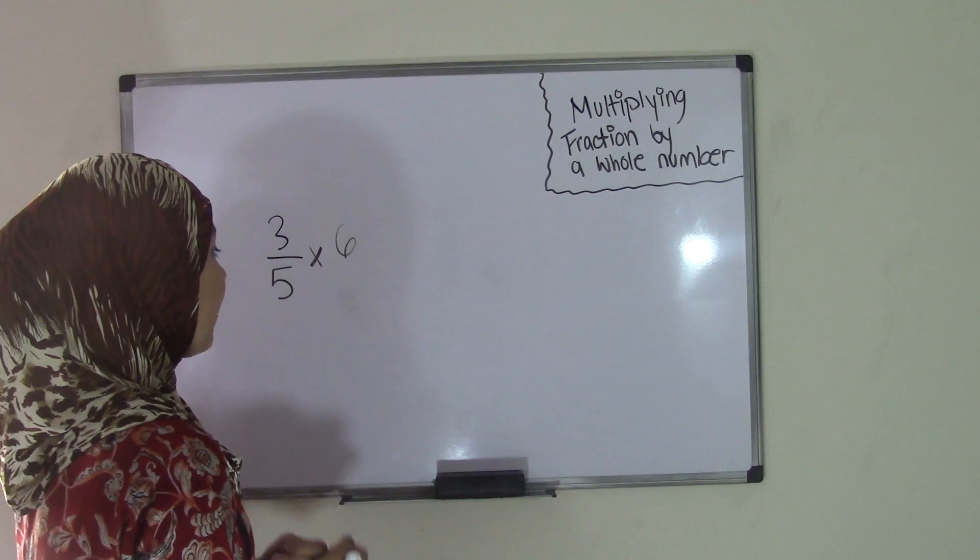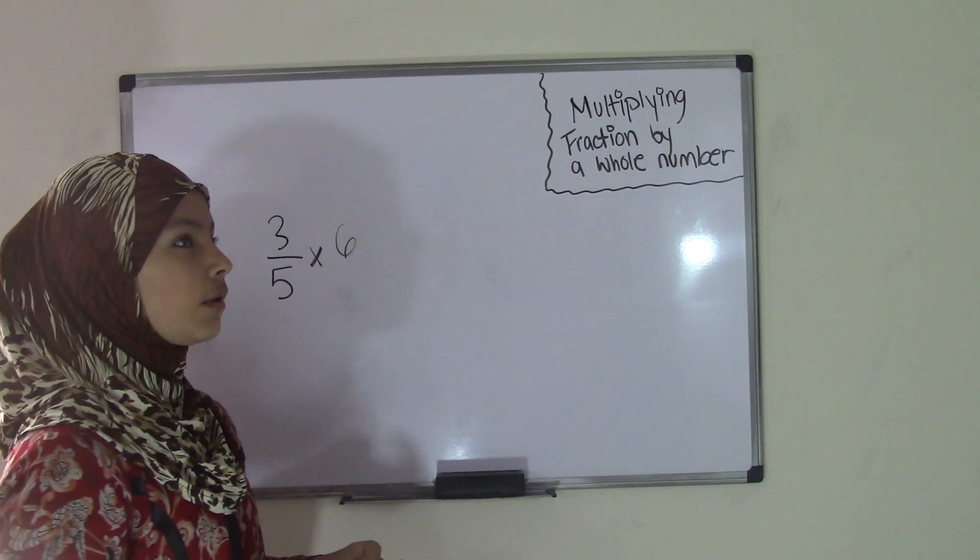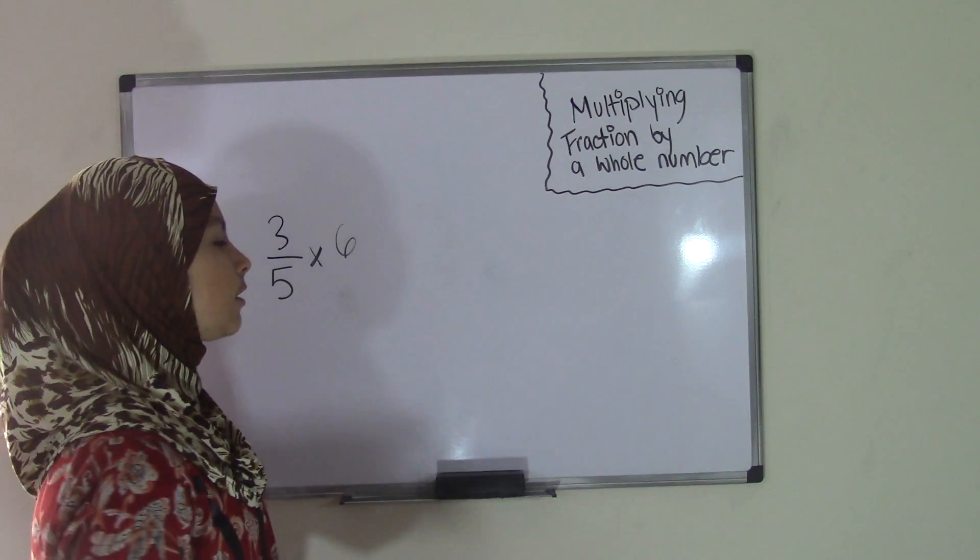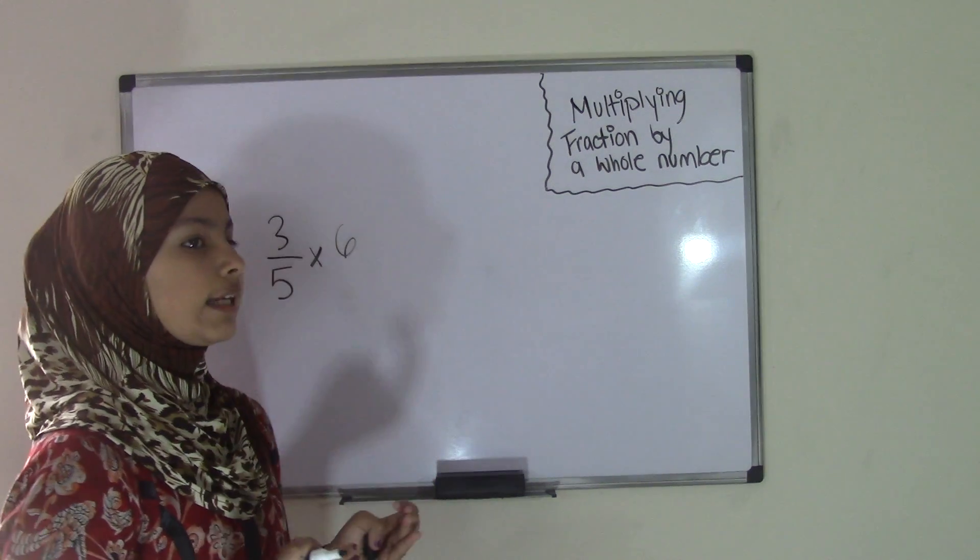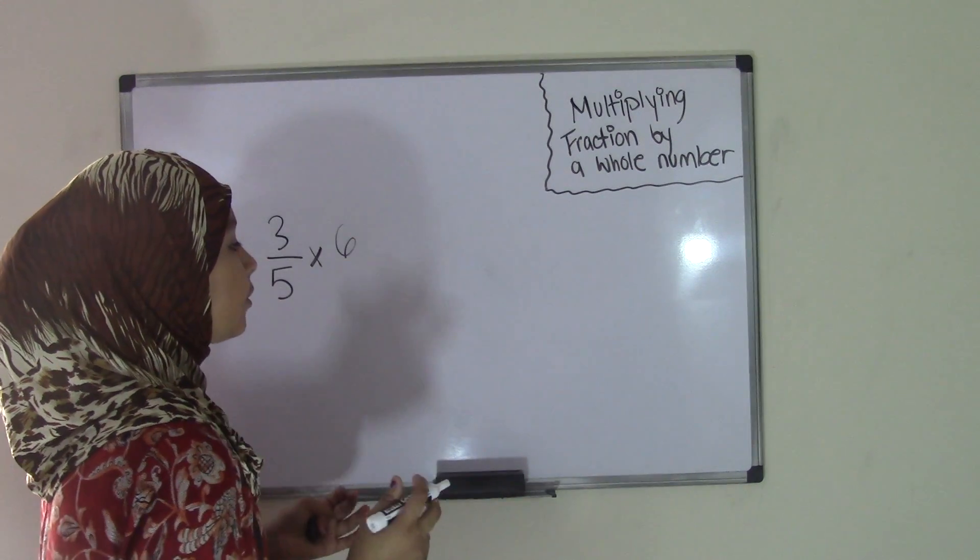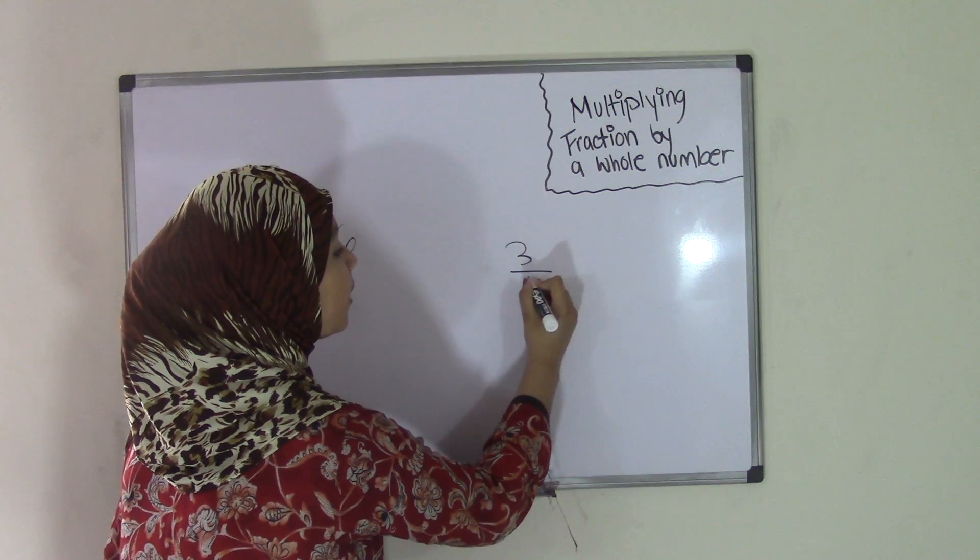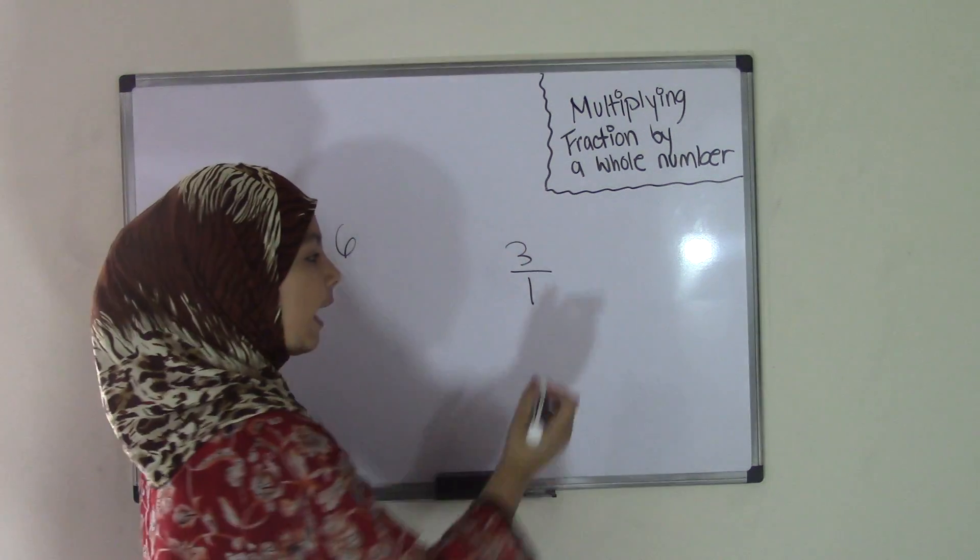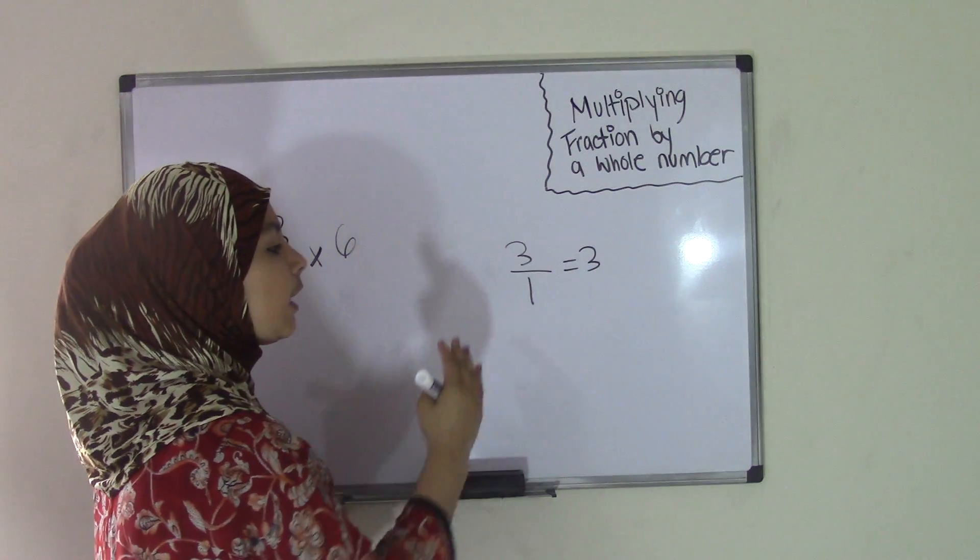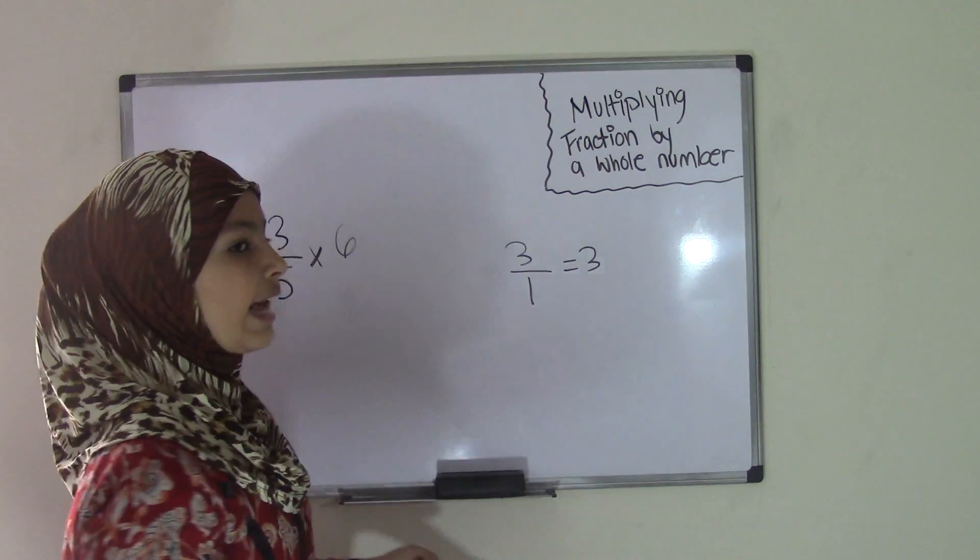Now keep in mind that when you're multiplying fractions, a whole number needs to have a denominator. Now a whole number is not a fraction, so how do we get a denominator? Well, this is the basic thing that you need to know: any number divided by 1—so for example, if we had 3 divided by 1, that is the same thing as 3. Because if you were to divide 3 by 1, you'd still get 3. So any number divided by 1 equals that number.